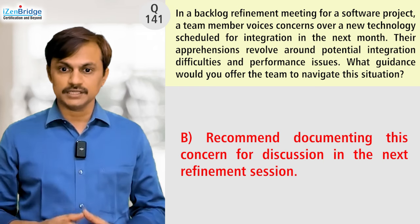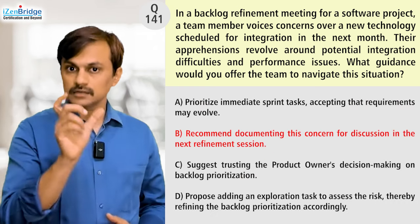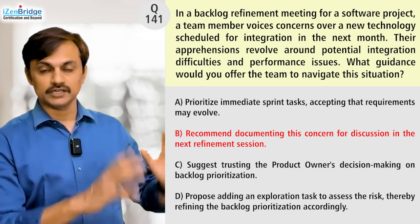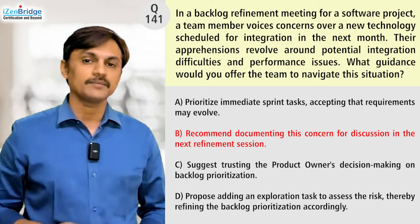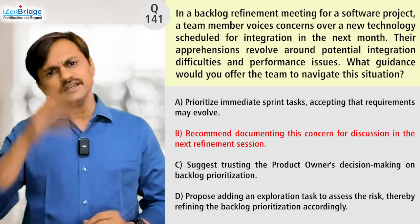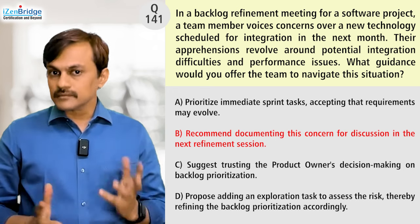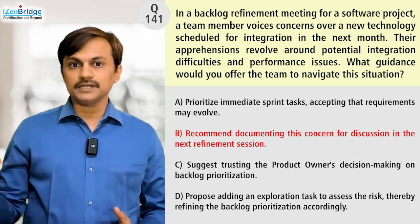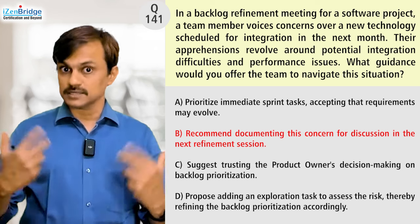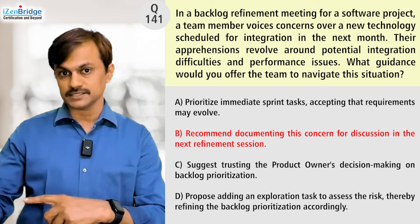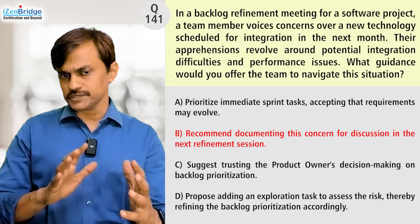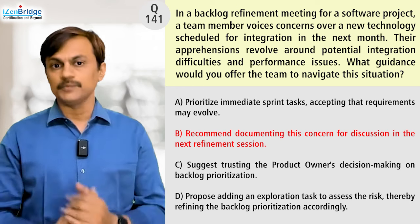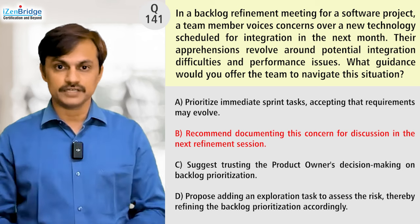Option B: recommend documenting this concern for discussion in the next refinement session. I like the documentation portion — putting it in a risk register, an information radiator, or on the Kanban board. However, deferring it to the next backlog refinement meeting looks like avoidance. There's no clear indicator that we need more information before acting. It's a candidate option, but we want something better that doesn't avoid the issue.